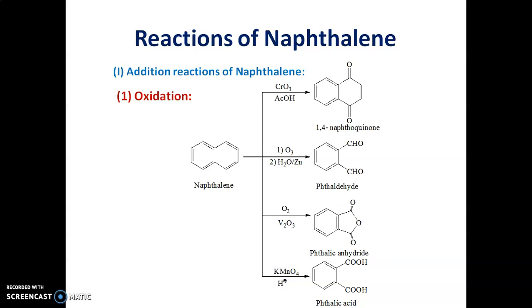Naphthalene is easily oxidized than benzene with chromium trioxide at room temperature in presence of acetic acid to give 1,4-naphthoquinone. Whereas, oxidation of naphthalene with vanadium gives phthalic anhydride. This method is of industrial use.